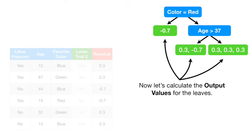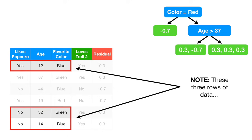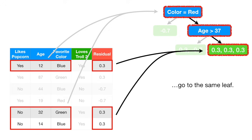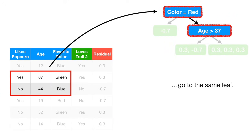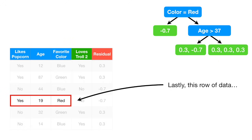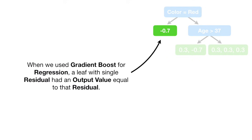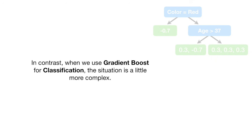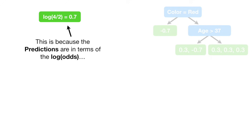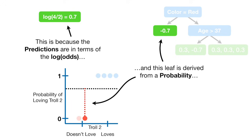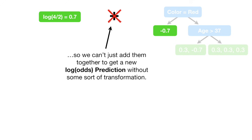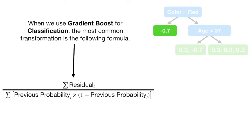Now let's calculate the output values for the leaves. Note: these three rows of data go to the same leaf. These two rows of data go to the same leaf. Lastly, this row of data goes to its own leaf. When we used gradient boost for regression, a leaf with a single residual had an output value equal to that residual. In contrast, when we use gradient boost for classification, the situation is a little more complex. This is because the predictions are in terms of the log of the odds, and this leaf is derived from a probability. So we can't just add them together and get a new log of the odds prediction without some sort of transformation.